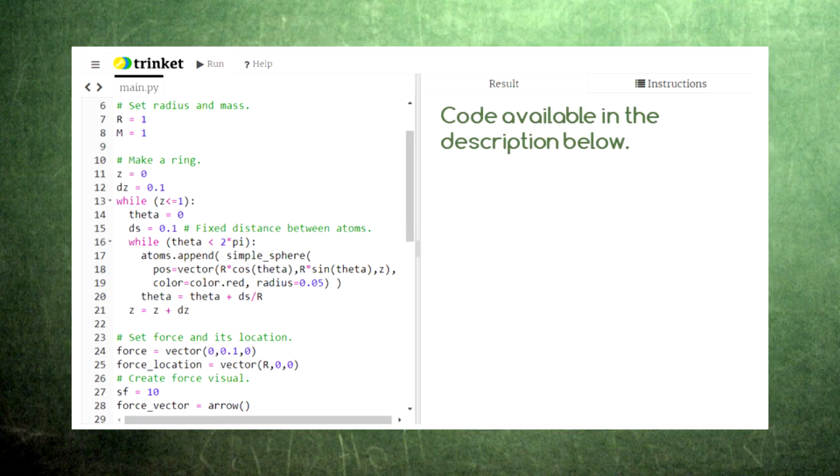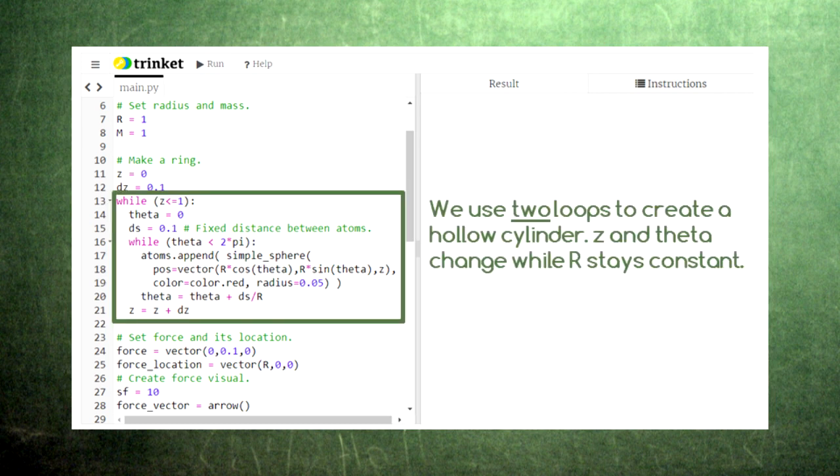This code rotates a shape using torque and works very similarly to our previous code. Here, we create a shape to rotate. We'll start out with a hollow cylinder, where every atom is the same distance from the central axis, but the atoms come in layers at different z-coordinates.